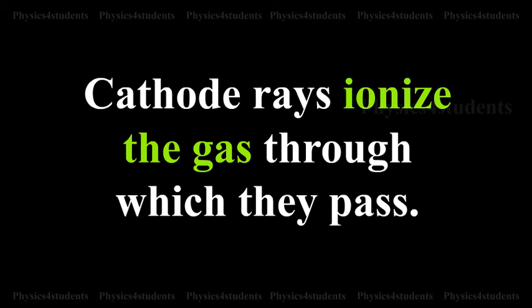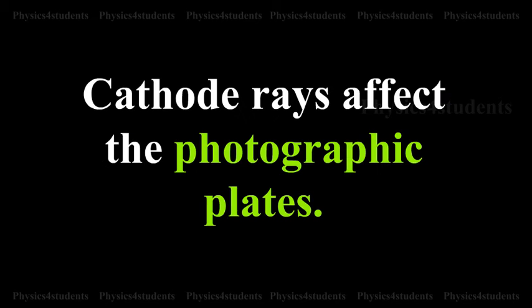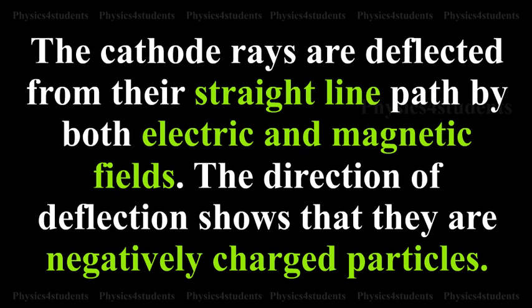Cathode rays ionize the gas through which they pass. Cathode rays affect the photographic plates. The cathode rays are deflected from their straight-lined path by both electric and magnetic fields. The direction of deflection shows that they are negatively charged particles.